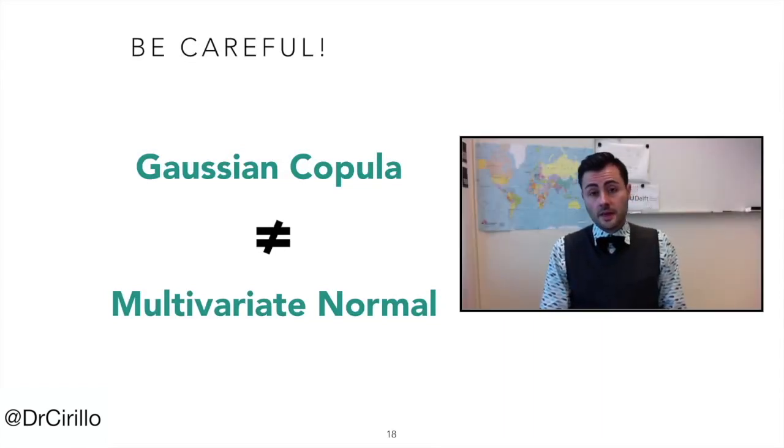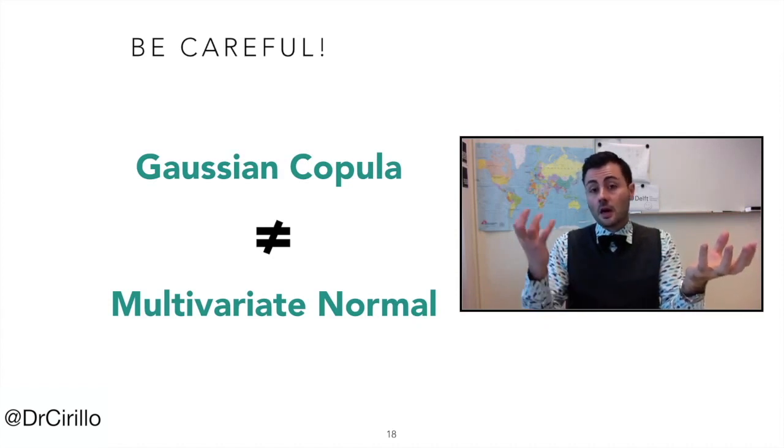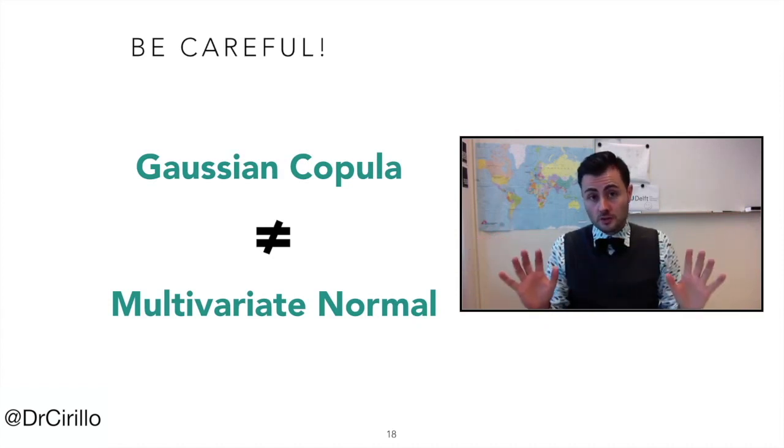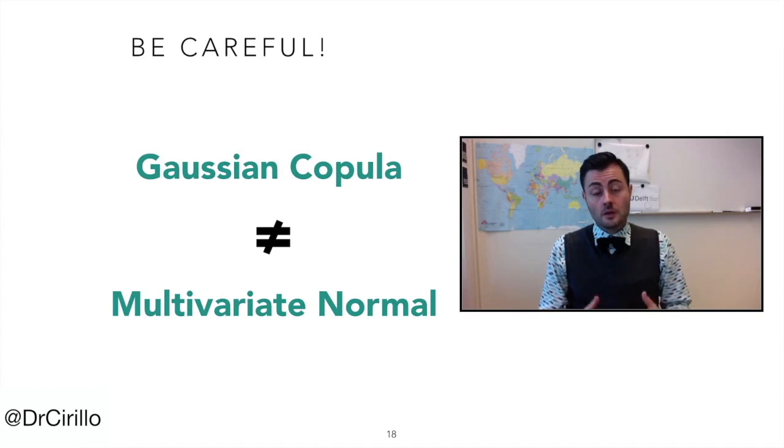Please notice that a multivariate Gaussian and a Gaussian copula are not the same thing in general. In a Gaussian copula, the marginals we take into consideration can be of whatever type. There is no limitation in practice. For what concerns the multivariate normal, on the contrary, the marginals are necessarily normally distributed. So this is a quite important difference.